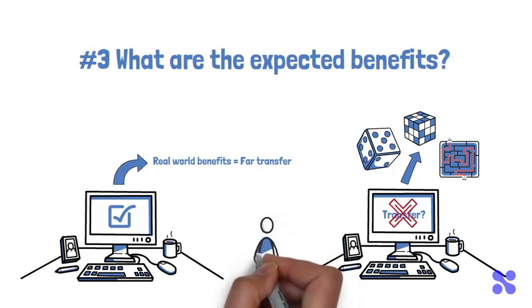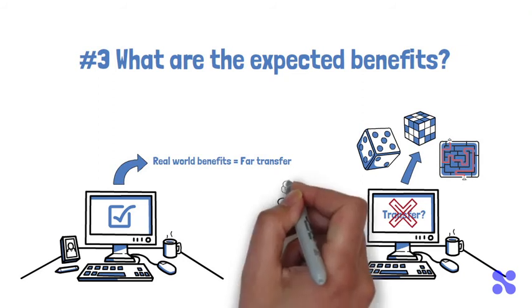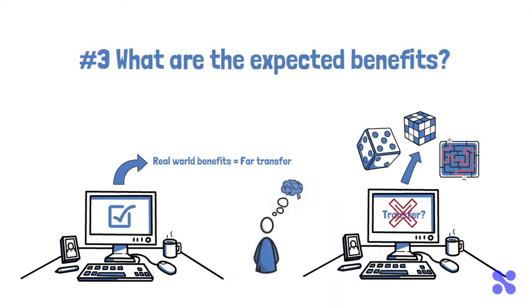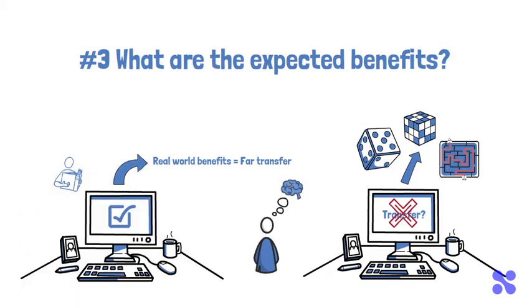When you're reviewing a new cognitive training platform, looking for evidence of FAR transfer will be beneficial in understanding how the benefits may apply to you. This information is typically found on the company website and shows evidence that the training has resulted in benefits that have direct relevance to things like academics, sports, injury rehabilitation, or other lifestyle activities.